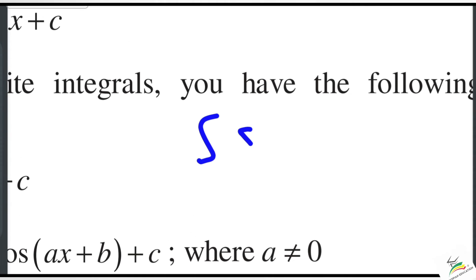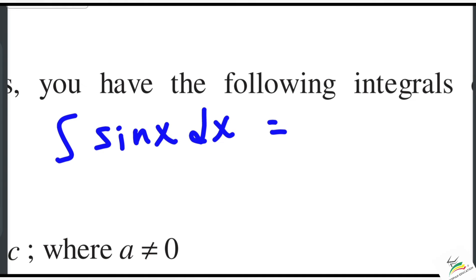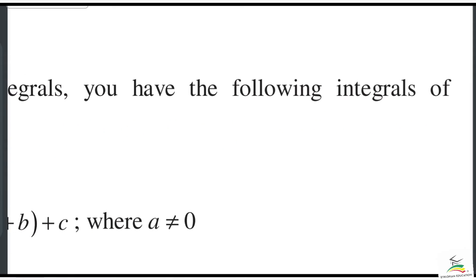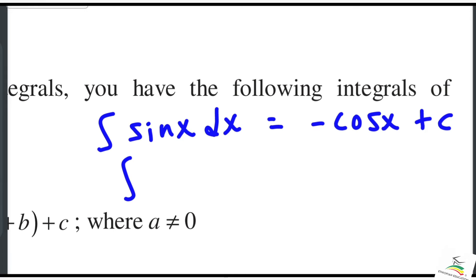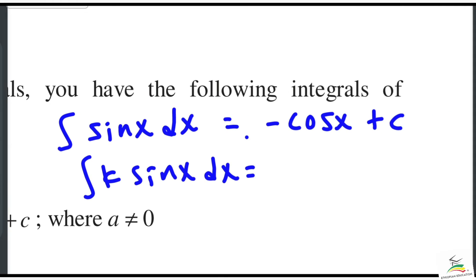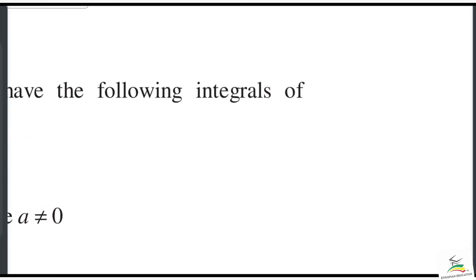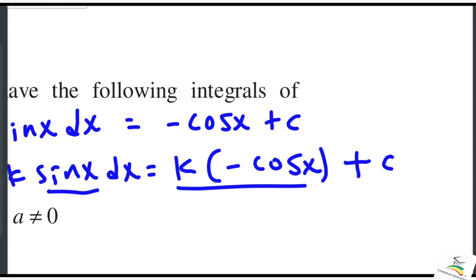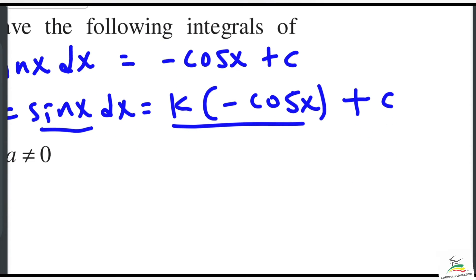So the integration of sine x dx comes out to negative cosec x plus C. And for k times sine x dx, we use the constant multiple rule: k times negative cosec x, which equals negative k times cos x.